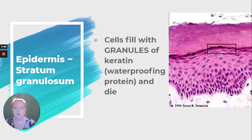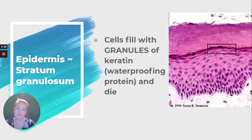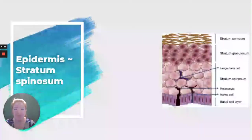Below that we have the stratum granulosum. In the stratum granulosum, we have cells that are filling with those granules of keratin — the waterproofing protein — and they're dying. So in this layer we go from living cells to dead cells that are providing waterproof protection.